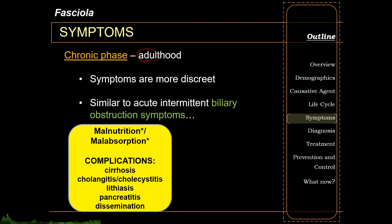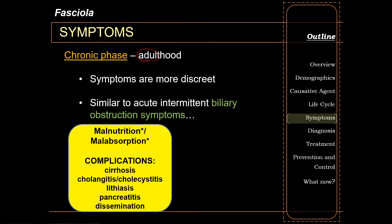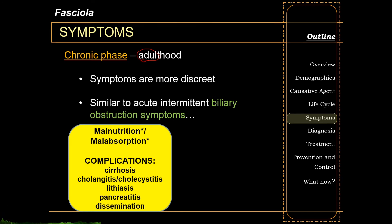In rare cases, Fasciola can cause lithiasis, where adults and eggs become nidi for stone formation. Malabsorption occurs primarily due to impaired absorption of fats and amino acids from bile blockage. In very rare cases, dissemination of Fasciola eggs into the lungs, brain, and eyes can occur.